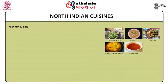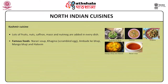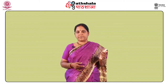Kashmir cuisine. The dishes of Kashmir cuisine are very rich, with lots of fruits, nuts, saffron, maize and nutmeg added in every dish. A few famous Kashmiri dishes are nahari soup, thajina that is scrambled egg, ambhade ke bhaji, mango bhaji and haak that is a meat dish. Mutton, chicken or fish is of prime importance in a Kashmiri meal along with rice. Everyday cooking often combines vegetables and meat in the same dish. Popular vegetarian dishes include dum aloo and chaman fried paneer. Desserts served are firni and halwa, green tea flavoured with saffron, cardamom and almonds.